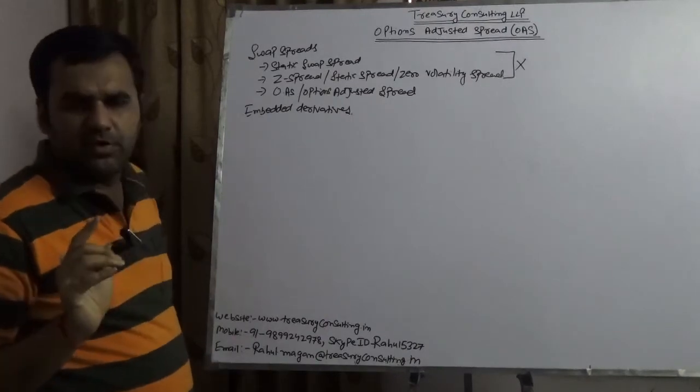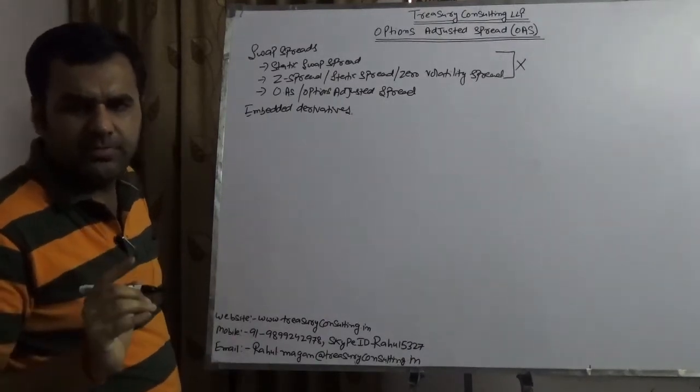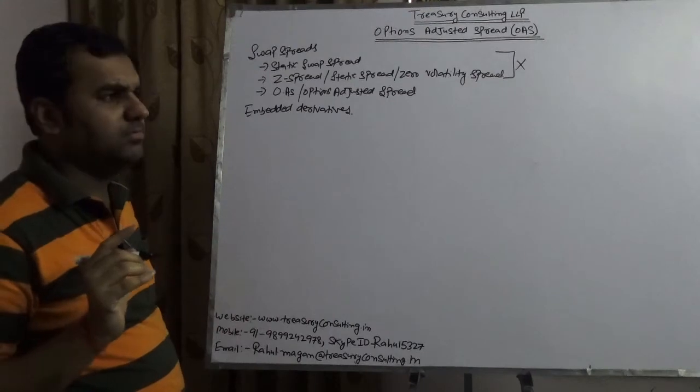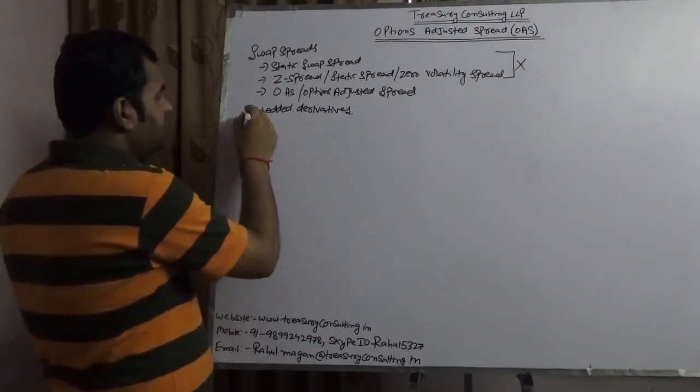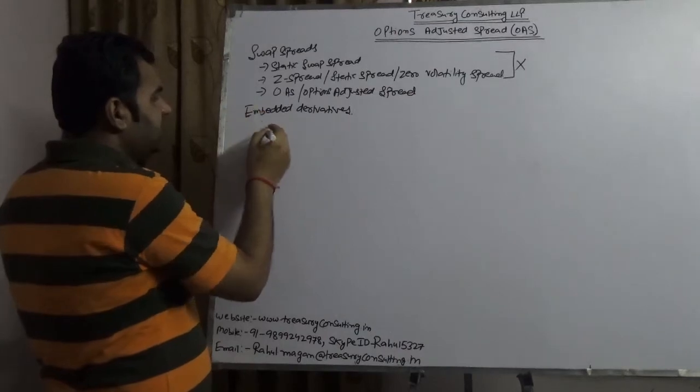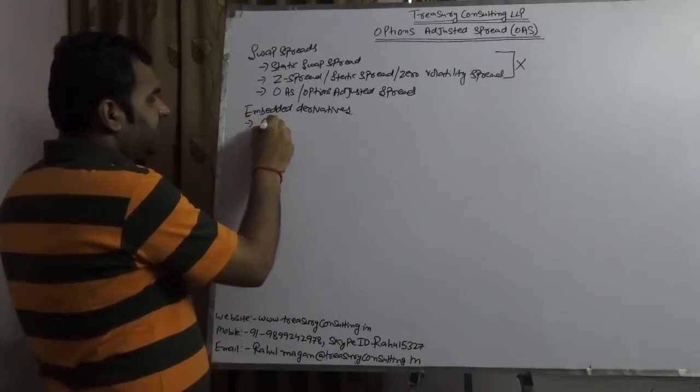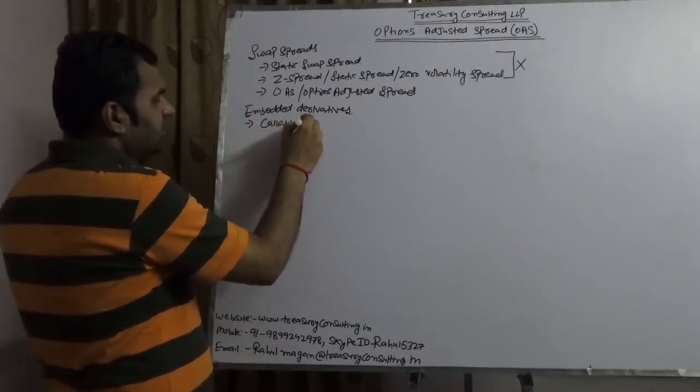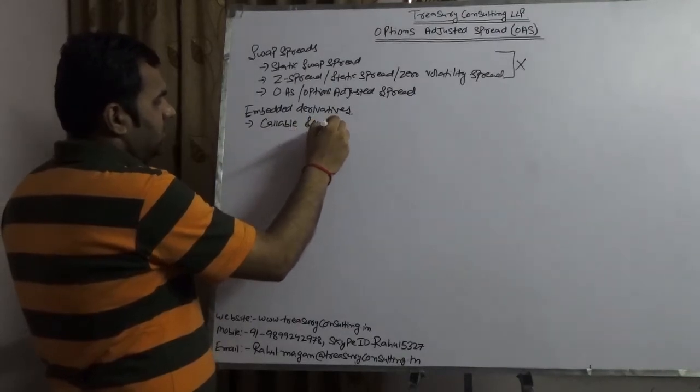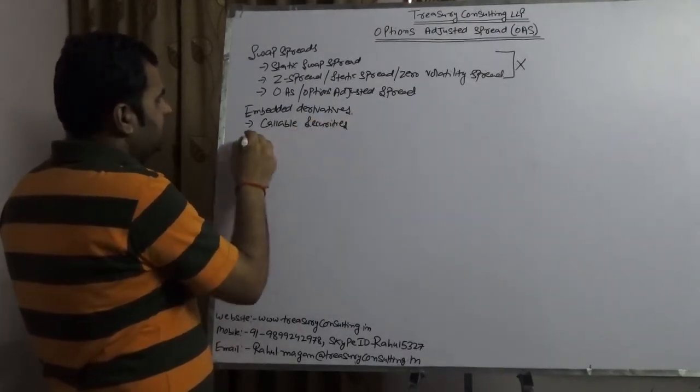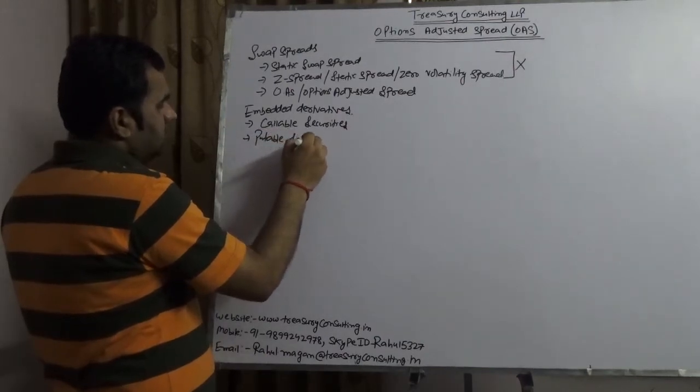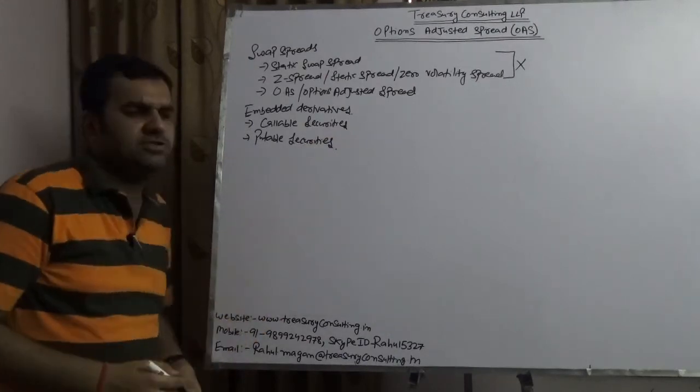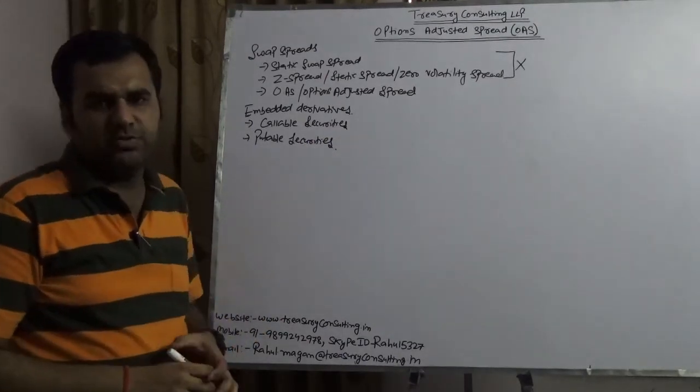For a bond or government security, corporate bond, or medium-term notes, we have something which is known as embedded derivatives, which include callable securities, putable securities, and one which is also known as collared securities, which we are going to discuss after that.